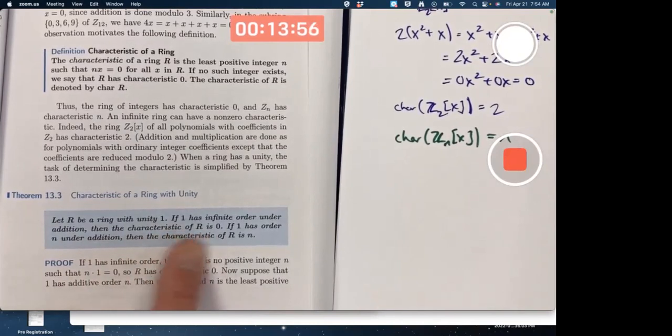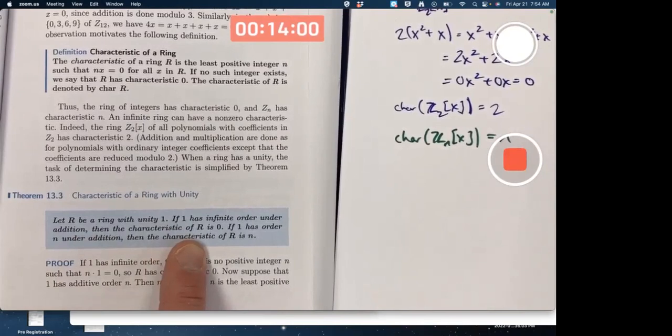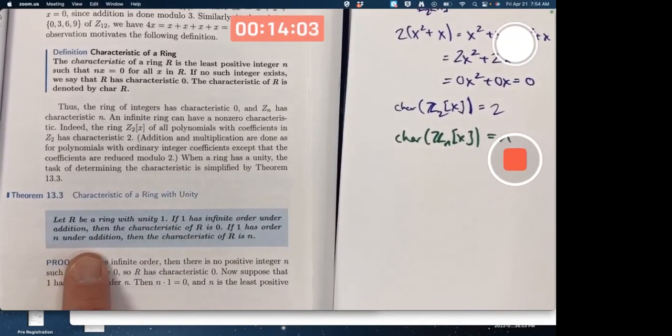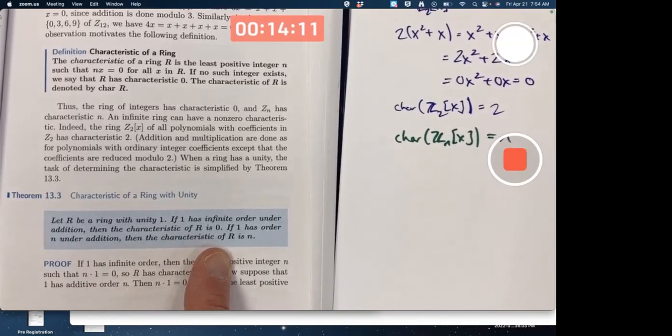So if we've got a ring with unity 1, the multiplicative identity, if one has infinite order under addition as a group element, then the characteristic of r is 0. If one has order n under addition, then the characteristic of r is n. You only have to look at the unity and what is its additive order. That's interesting. Maybe a little surprising.